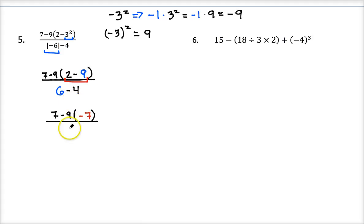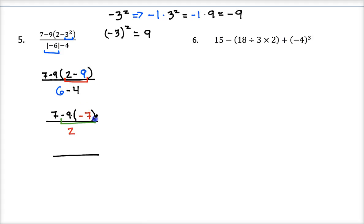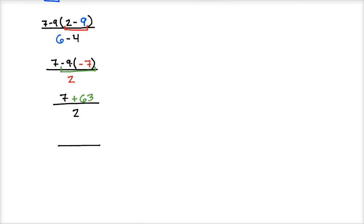In the denominator, the absolute value of negative 6 becomes positive 6, so this is 6 minus 4, which equals 2. Back in the numerator, I see subtraction 7 minus 9 but also multiplication times negative 7, so we do multiplication first: negative 9 times negative 7 — a negative times a negative is positive — that's plus 63. So we have 7 plus 63 all over 2. In the numerator 7 plus 63 is 70, giving us 70 over 2, and 70 divided by 2 is 35.